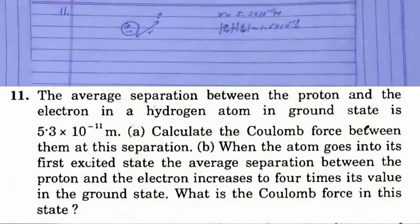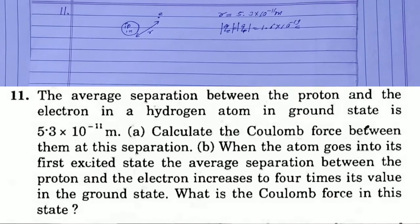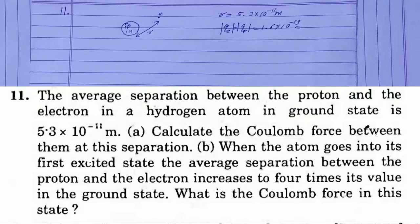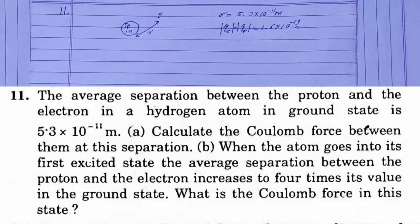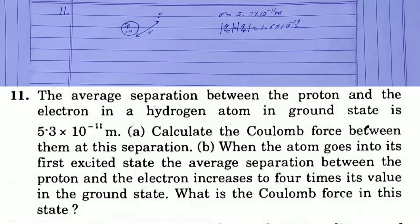SC Verma Solution, Chapter 4 - The Force, Question Number 11. The average separation between the proton and the electron in a hydrogen atom in ground state is 5.3×10⁻¹¹ meters. First, calculate the Coulomb force between them at this separation. Second, when the atom goes into its first excited state, the average separation increases to four times its value in the ground state — what is the Coulomb force in this situation?